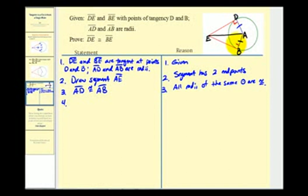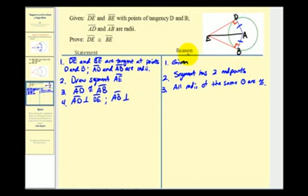We also know that the angle here and the angle here are right angles because these two segments are perpendicular to the two radii. Specifically, segment AD is perpendicular to segment DE, and segment AB is perpendicular to segment BE. This is by the tangent-to-circle theorem.